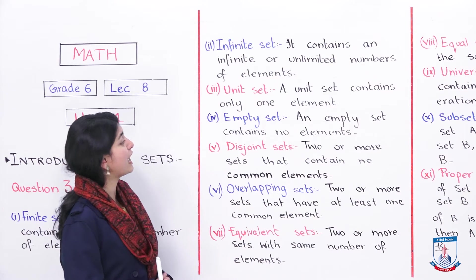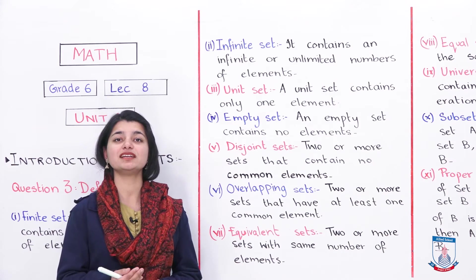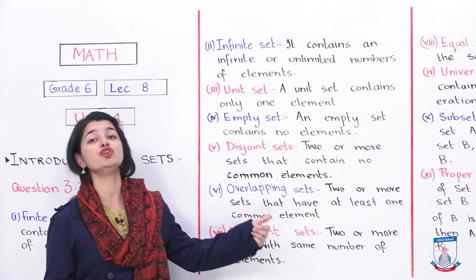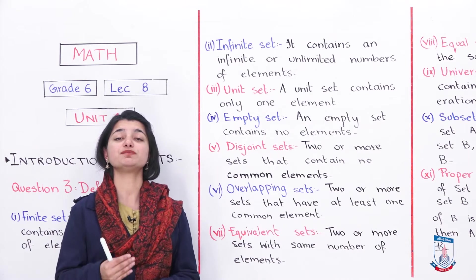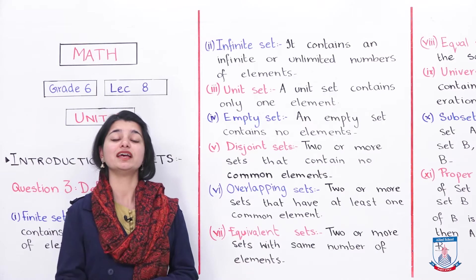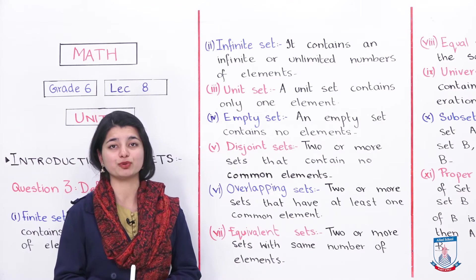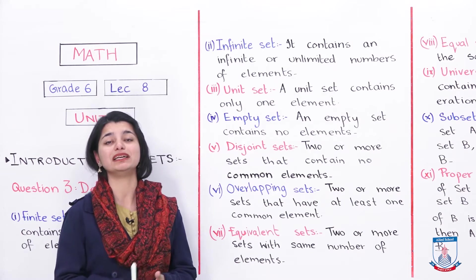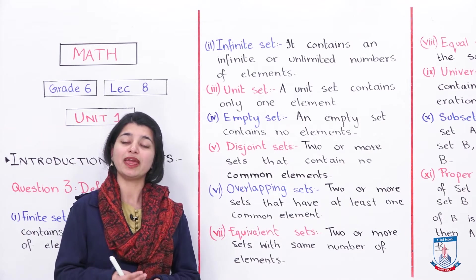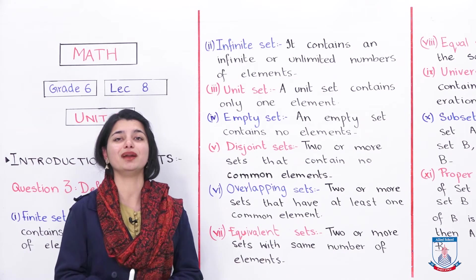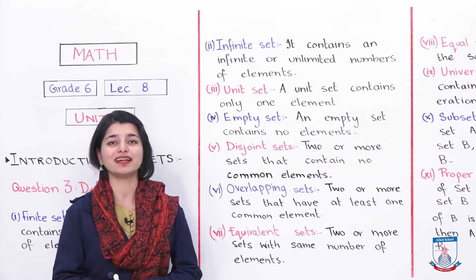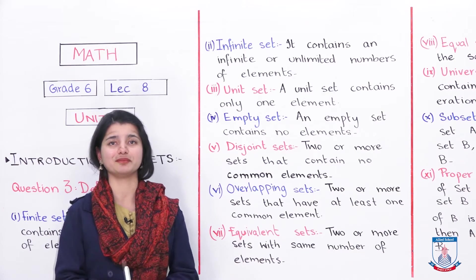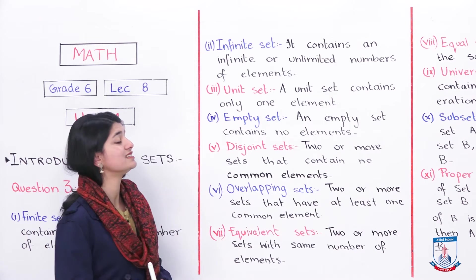Next we have empty set. This set contains no elements — it is an empty set, also called a null set. For example, you can write multiples of two that are also odd numbers. There is no number which is a multiple of two and also an odd number. So in this case, we say that this set is a null set — no numbers fall in this set.